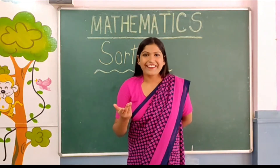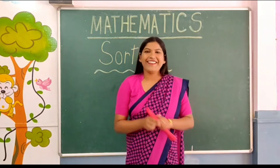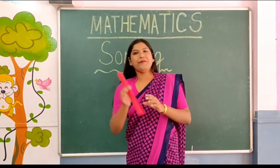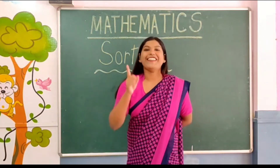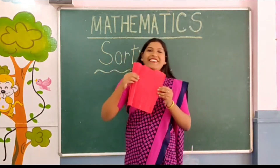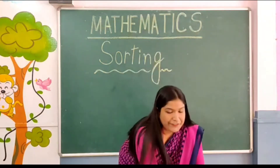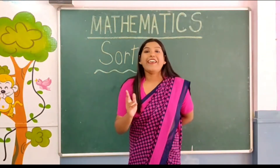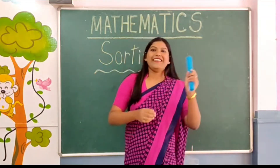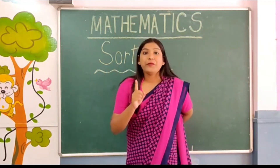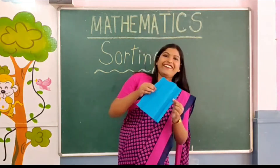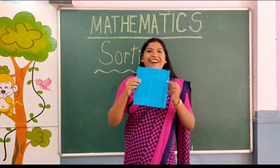Where is Red? Where is Red? Here I am. Here I am. Show me if you can, show me if you can. Here I am. Here I am. Where is Blue? Where is Blue? Here I am. Here I am. Show me if you can, show me if you can. Here I am. Here I am.